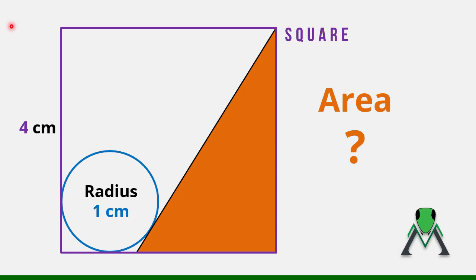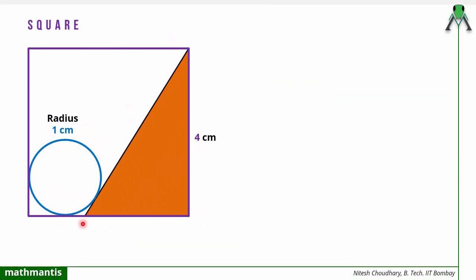Hello everyone, let us discuss this interesting geometry problem. There is a square given to us whose side is 4 cm and there is a circle inside the square which is touching two sides of the square. The radius of that circle is 1 cm and this circle is also touching a triangle that is inside the square. The triangle is such that one of its sides is the same as a side of the square. We have to find the area of this triangle. We will use the properties of circles to solve this question.